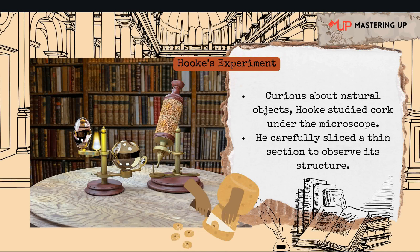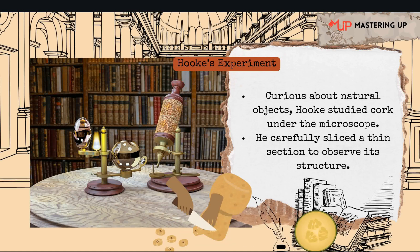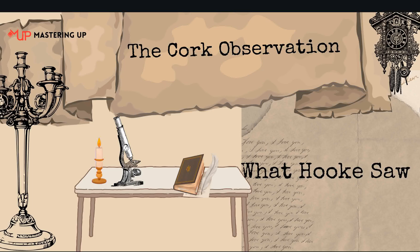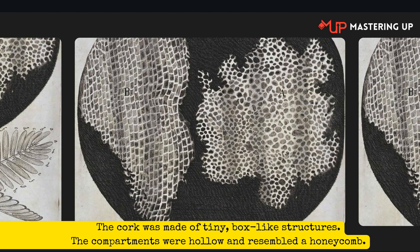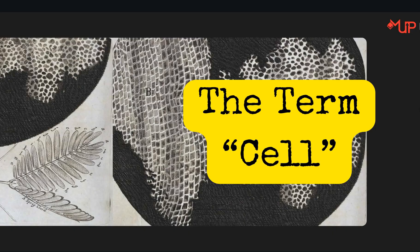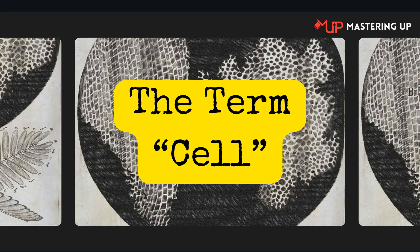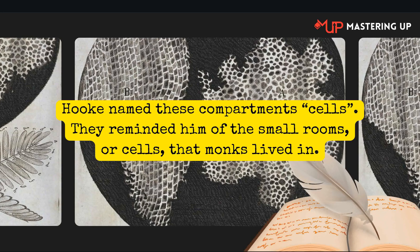What he saw amazed him. The cork appeared to be made of tiny box-like structures arranged in a repeated pattern. Hooke described them as looking like a honeycomb. These structures were completely unknown to science at that time, and Hooke was the first to document them. He noticed that the structures were hollow and seemed to be separated by thin walls. He called these compartments "cells" because they reminded him of the small, simple rooms or cells that monks lived in.